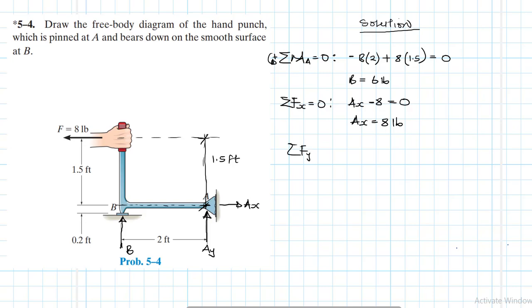Then we have summation of forces in the Y direction. What do we have in the Y? We have B plus Ay equal to 0. We have already calculated what B is, B is 6, so we just replace it there. Therefore, Ay is going to be equal to minus 6 pounds.